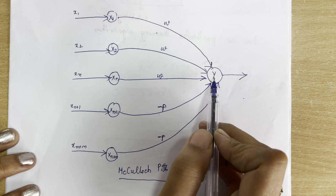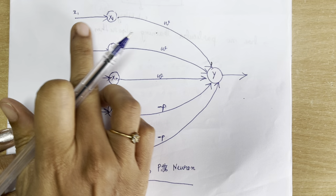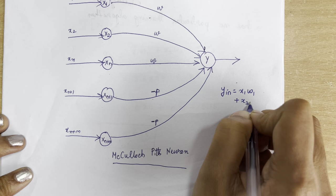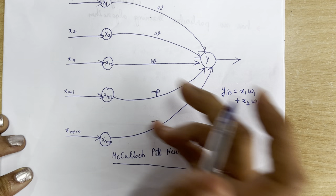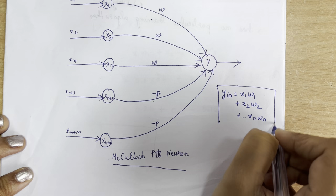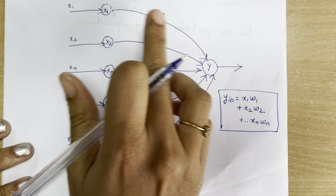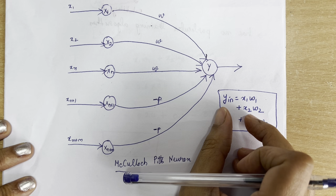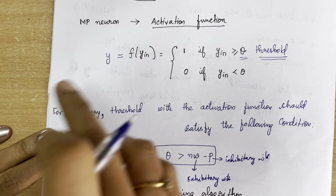We need to find out the output y. The output y_input is nothing but the summation of the inputs multiplied by their weights. We can write: y_input = x1·w1 + x2·w2 + ... + xn·wn for excitatory inputs, and similarly xn+1·(−p) + ... + xn+m·(−p) for inhibitory inputs. This is how you find the net input y_input.